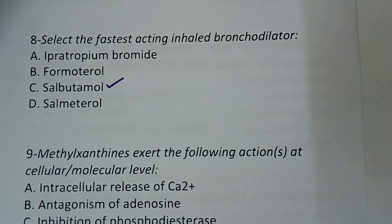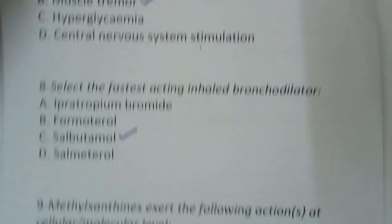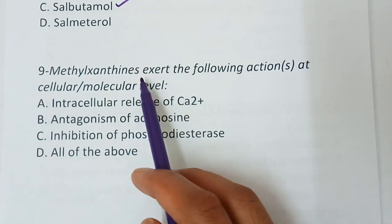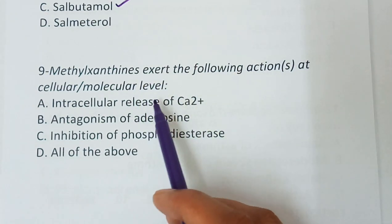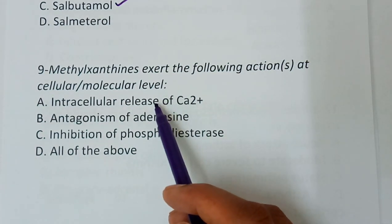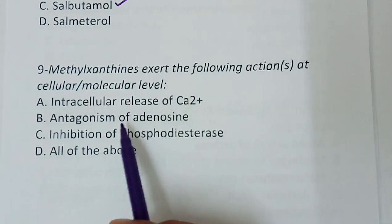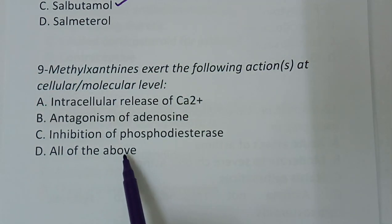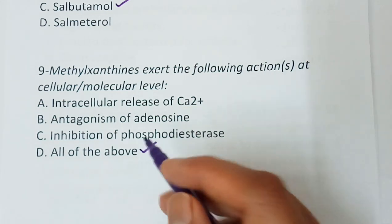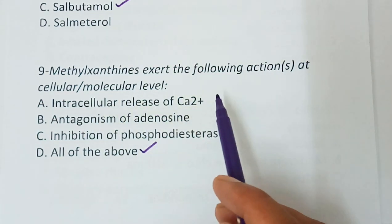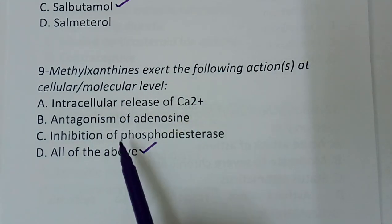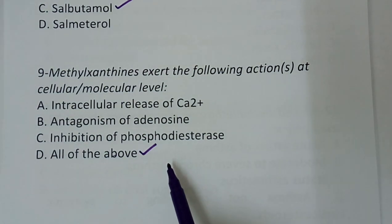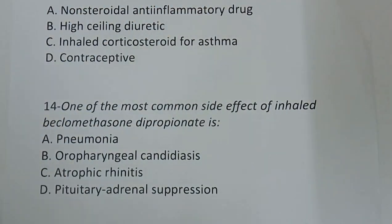Question number nine: Methylxanthines exert the following actions at the cellular or molecular level — intracellular release of calcium ions, antagonism of adenosine, inhibition of phosphodiesterase, or all of the above. The correct answer is all of the above. Methylxanthines' mechanism of action includes intracellular release of calcium ions, phosphodiesterase inhibition, and adenosine antagonism.